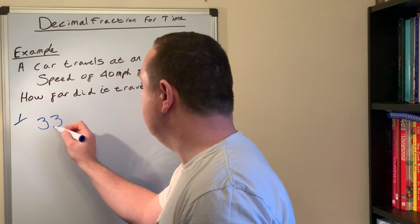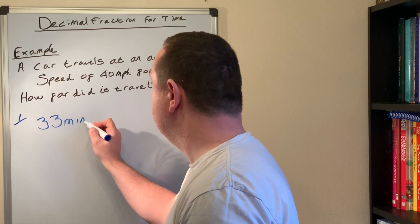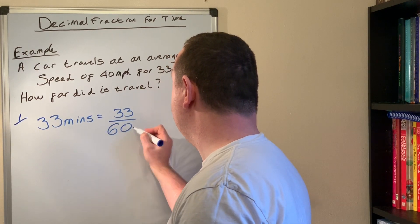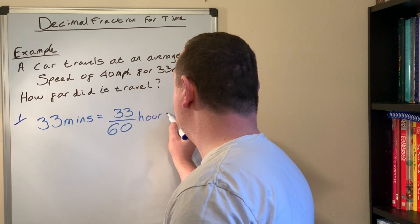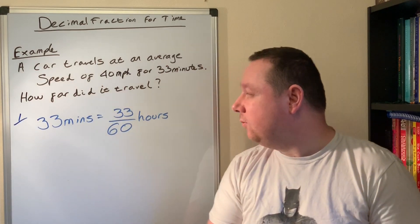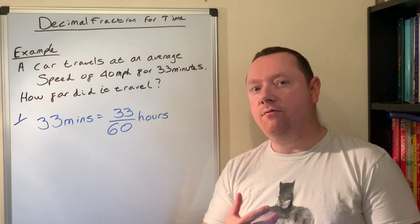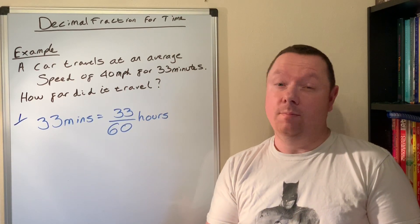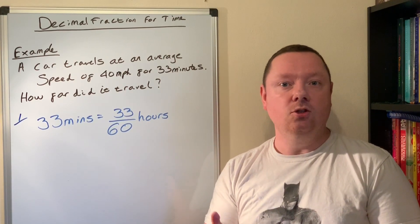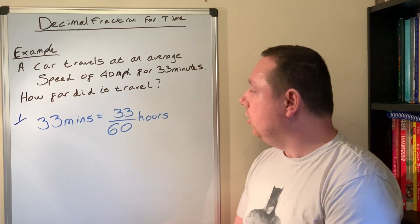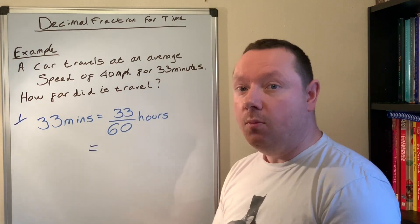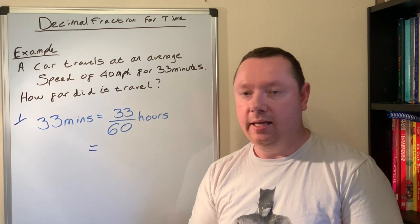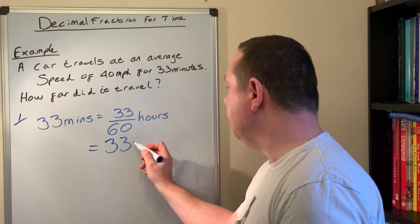So I've got 33 minutes, so that's 33 out of 60 hours. But you should notice when you look at 33 out of 60, it's not a very convenient fraction. If you can't simplify it to a nice small fraction like a half or a quarter, use a calculator to change it to a decimal. I need to do 33 divided by 60, which is 0.55 hours.